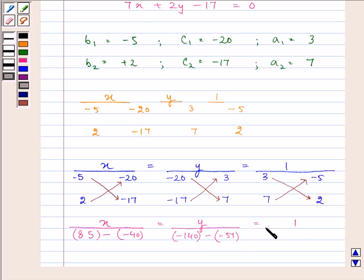Then again, 1 divided by 3 multiplied by 2 will give us 6 minus the product of 7 and minus 5, that is, minus 35.